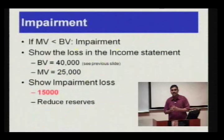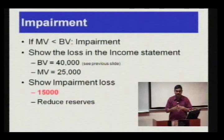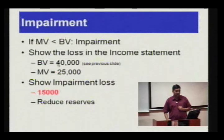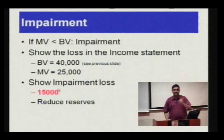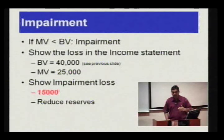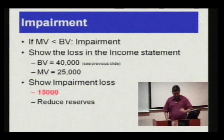But if the market value is less than the book value, then you are bound to show the impairment, and that is called impairment loss. Continuing with the same example, if the book value is 40,000 and the market value is 25,000, you have to show an impairment loss of 15,000. However, the impairment loss will not be shown on the balance sheet as a separate item, but will be shown in the income statement as a separate item.